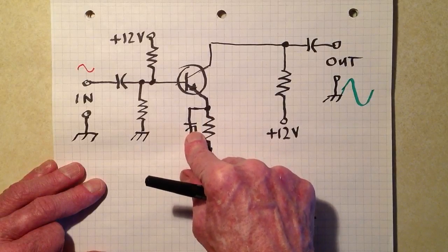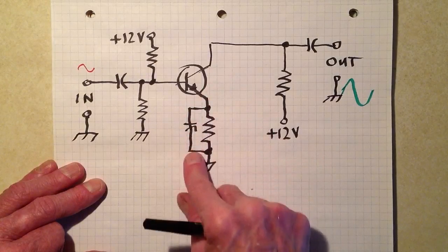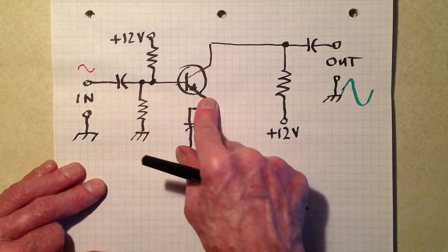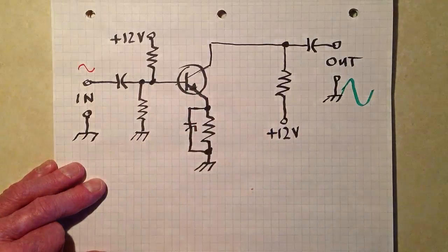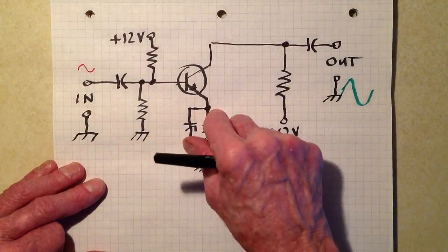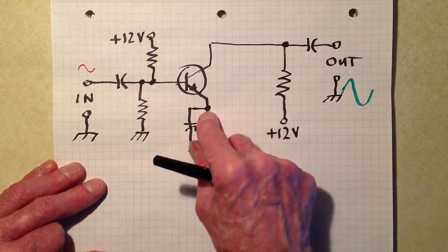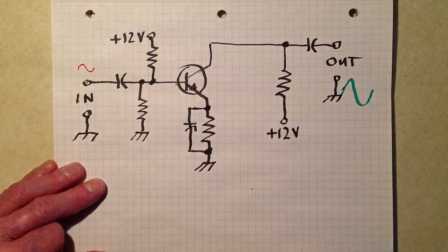This is a bypass capacitor because it's intended to bypass any signal that might disrupt the operation of this transistor. We don't want the input signal to be reflected back into this emitter part of the circuit.